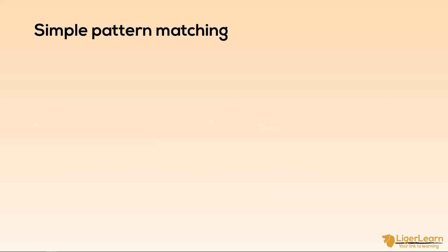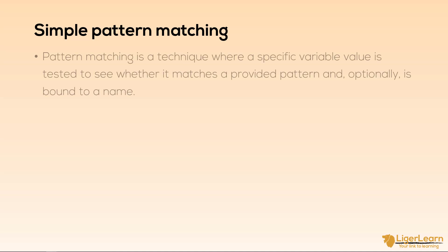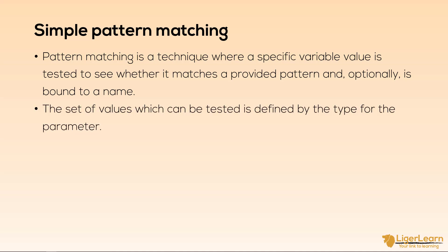Pattern matching is a technique where a specific variable value is tested to see whether it matches a provided pattern. Quite often we will bind the matched variable to a name which we can then use in the function body as well. The set of values which can be tested for a match is defined by the type for the parameter.